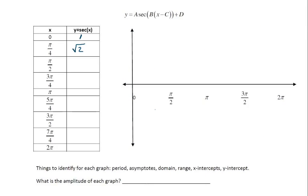For secant, I'll do something very similar — evaluate secant by thinking of values of cosine. Cosine of zero is one, so the reciprocal is one. Cosine of pi over four is root two over two, so the reciprocal is root two. Cosine of pi over two is zero, so secant is undefined at pi over two. Filling in the other values by taking reciprocals of cosine gives us the secant table. This is why we spend a lot of time on sine and cosine coordinates — it really helps when graphing.